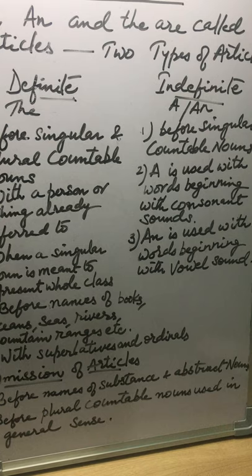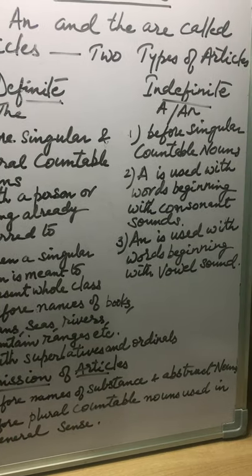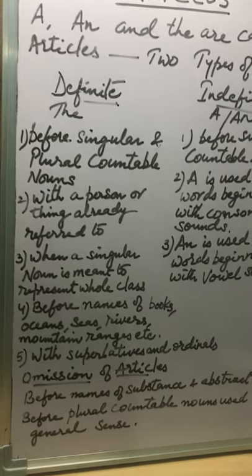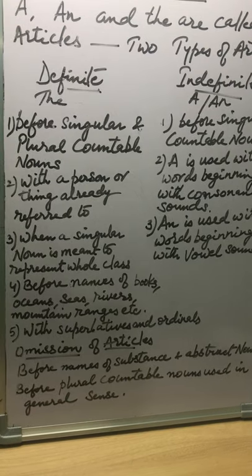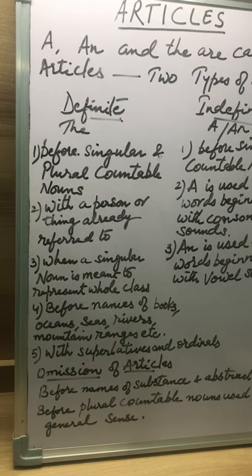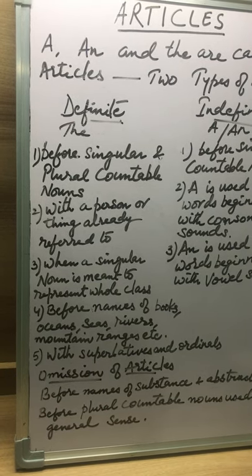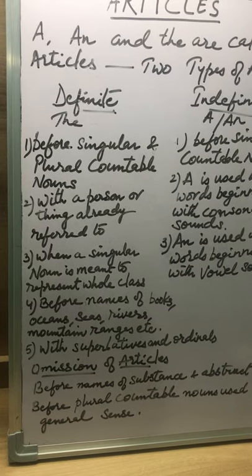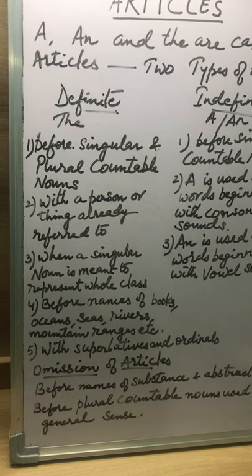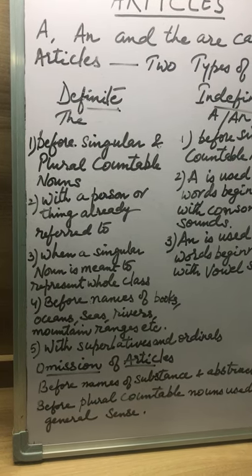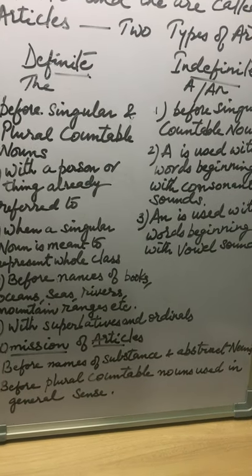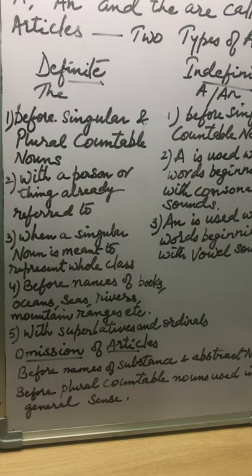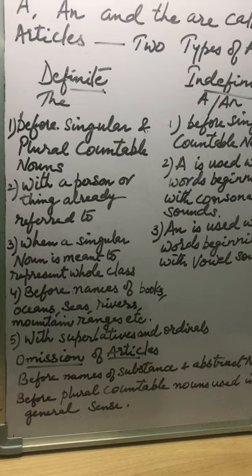Articles are sometimes omitted. Before the names of substances and abstract nouns, no article is used. For example, 'sugar is bad for your teeth' — no need to say 'the sugar'. 'Gold is a precious metal' — we don't say 'the gold'. 'Wisdom is a gift', 'honesty is the best policy' — 'honesty' is an abstract noun and takes no article.